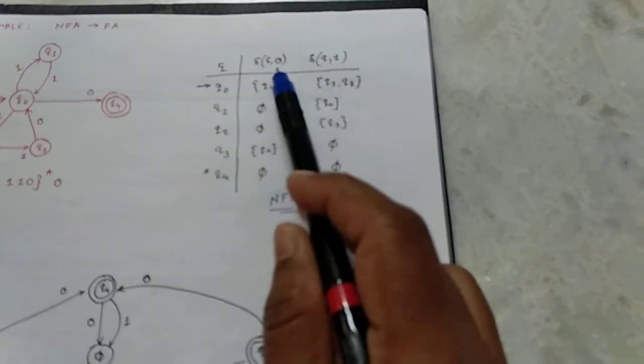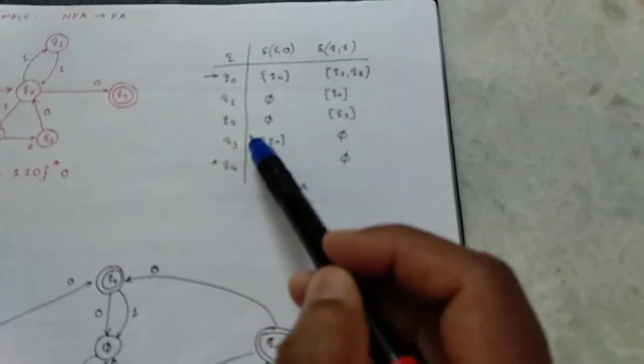q1q2 to 0: transition function is q1 to 0 union q2 to 0. For q1 to 0 it's phi, and q2 to 0 is also phi.